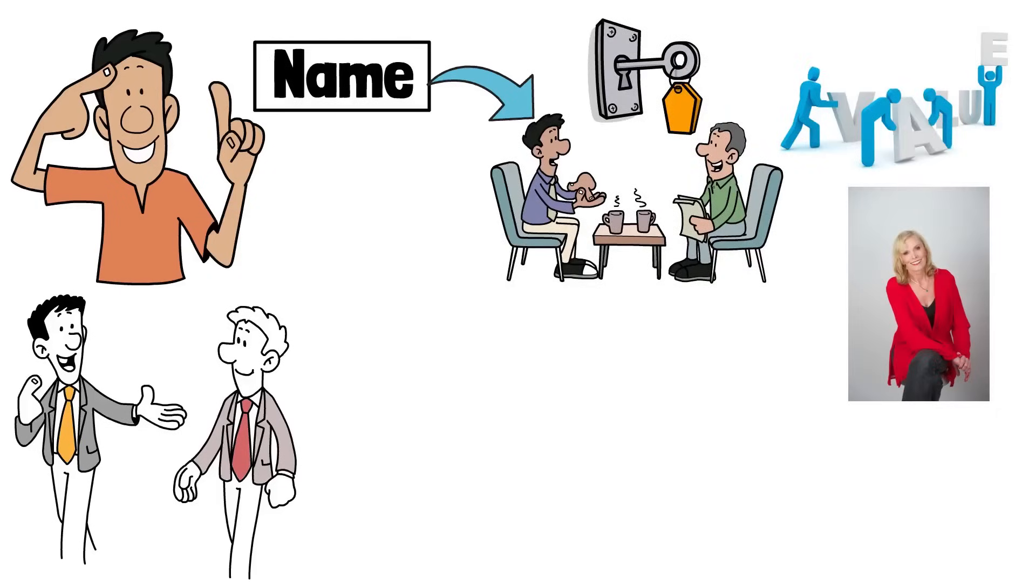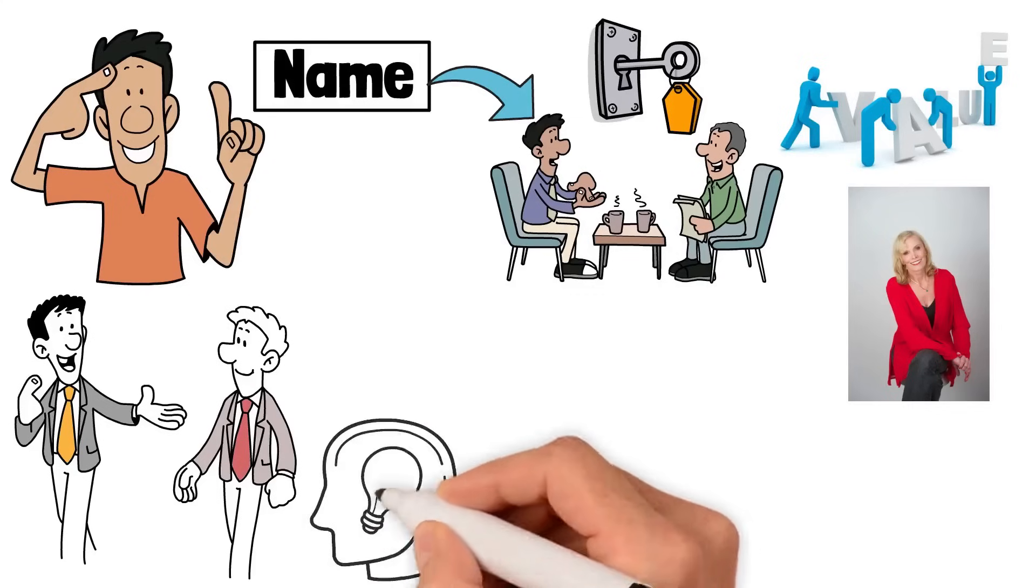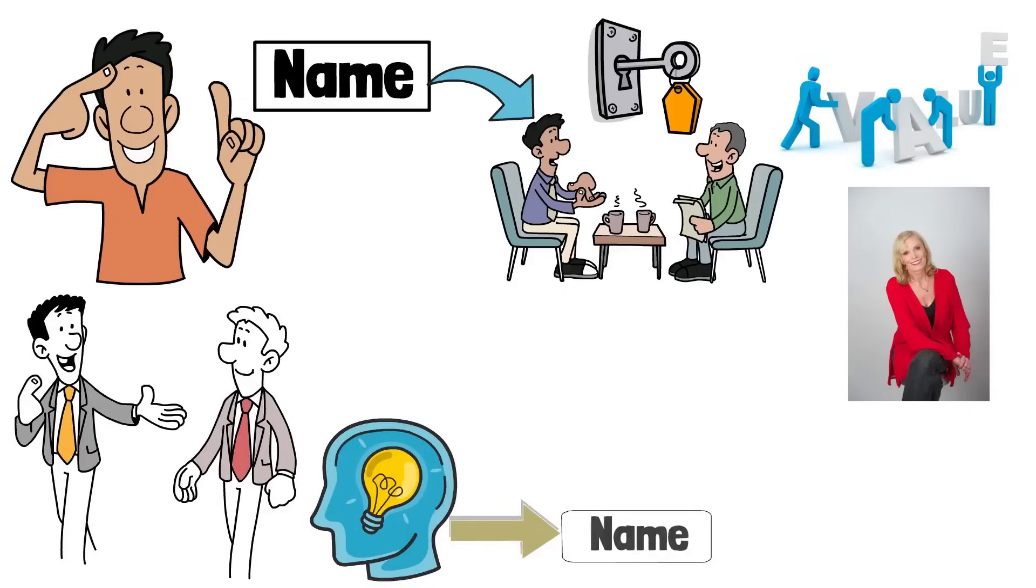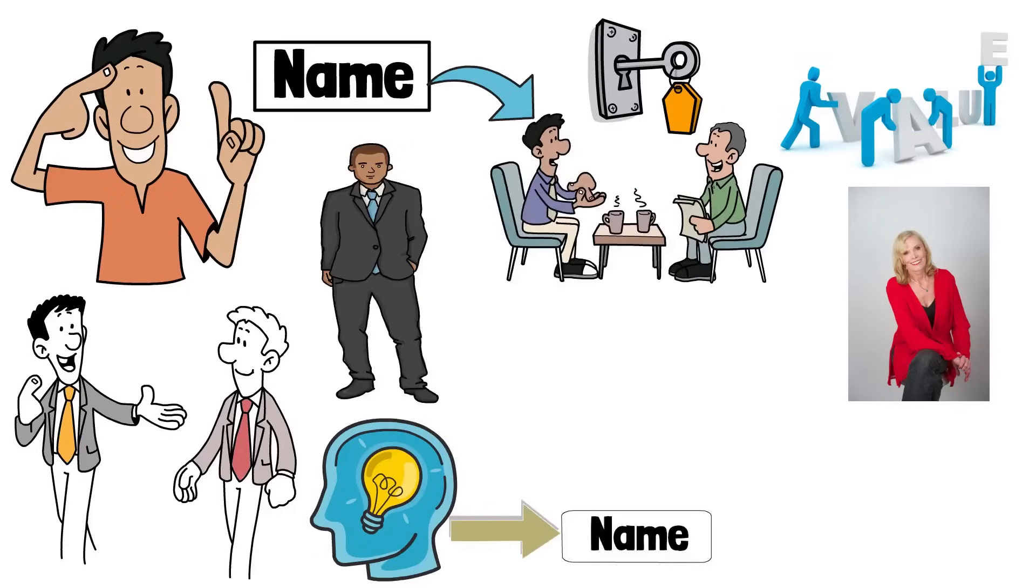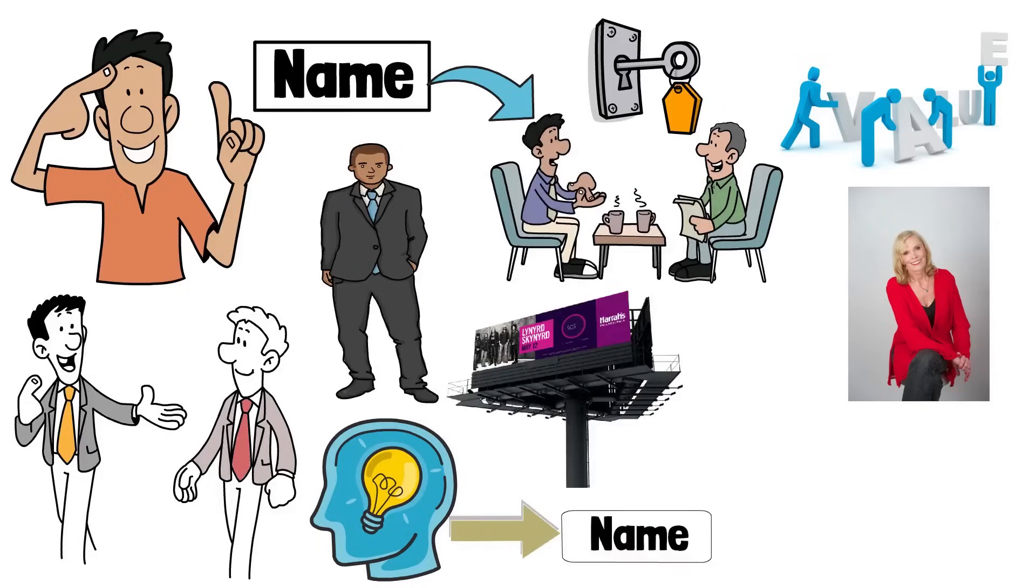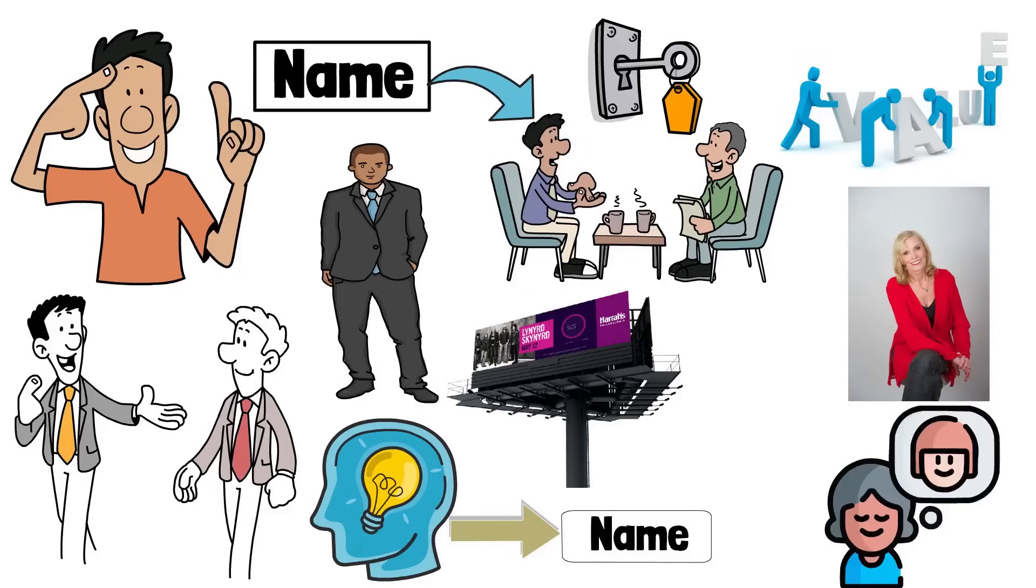Lowndes also suggests techniques for remembering details about people. One method is creating mental associations or visualizations linked to their name or details they share. For example, if you meet a Mike who works in marketing, you might visualize him standing next to a giant billboard. These mental images can act as triggers, helping you recall details about the person the next time you meet.